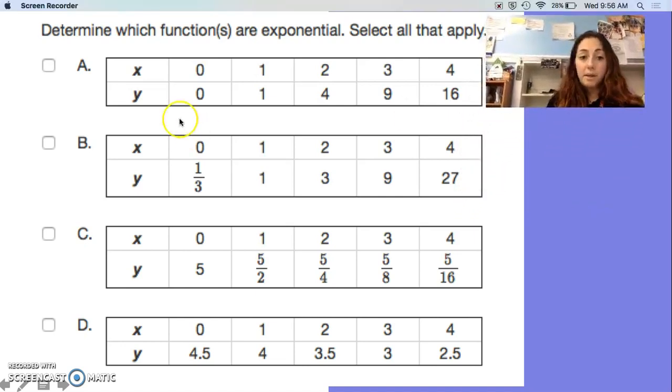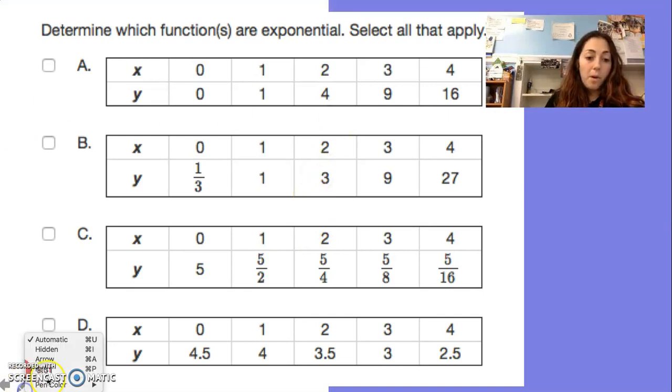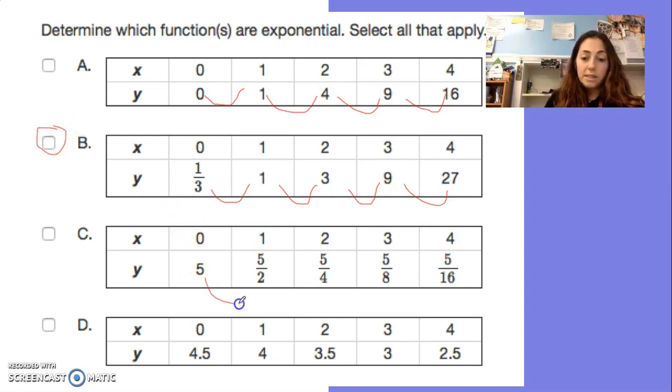Determine which functions are exponential. Look through each of these, hit pause right now, hit play when you're done. Number 1 is actually that quadratic function that we talked about before - the change from one to the next is not the same constant rate. For B, every time you're multiplying by 3, that's exponential. For C, you're multiplying by 1/2 each time, that's exponential. For D, you're subtracting 0.5 each time, that's linear. That's all. Hope you had some fun with exponential functions. Have the best day ever.